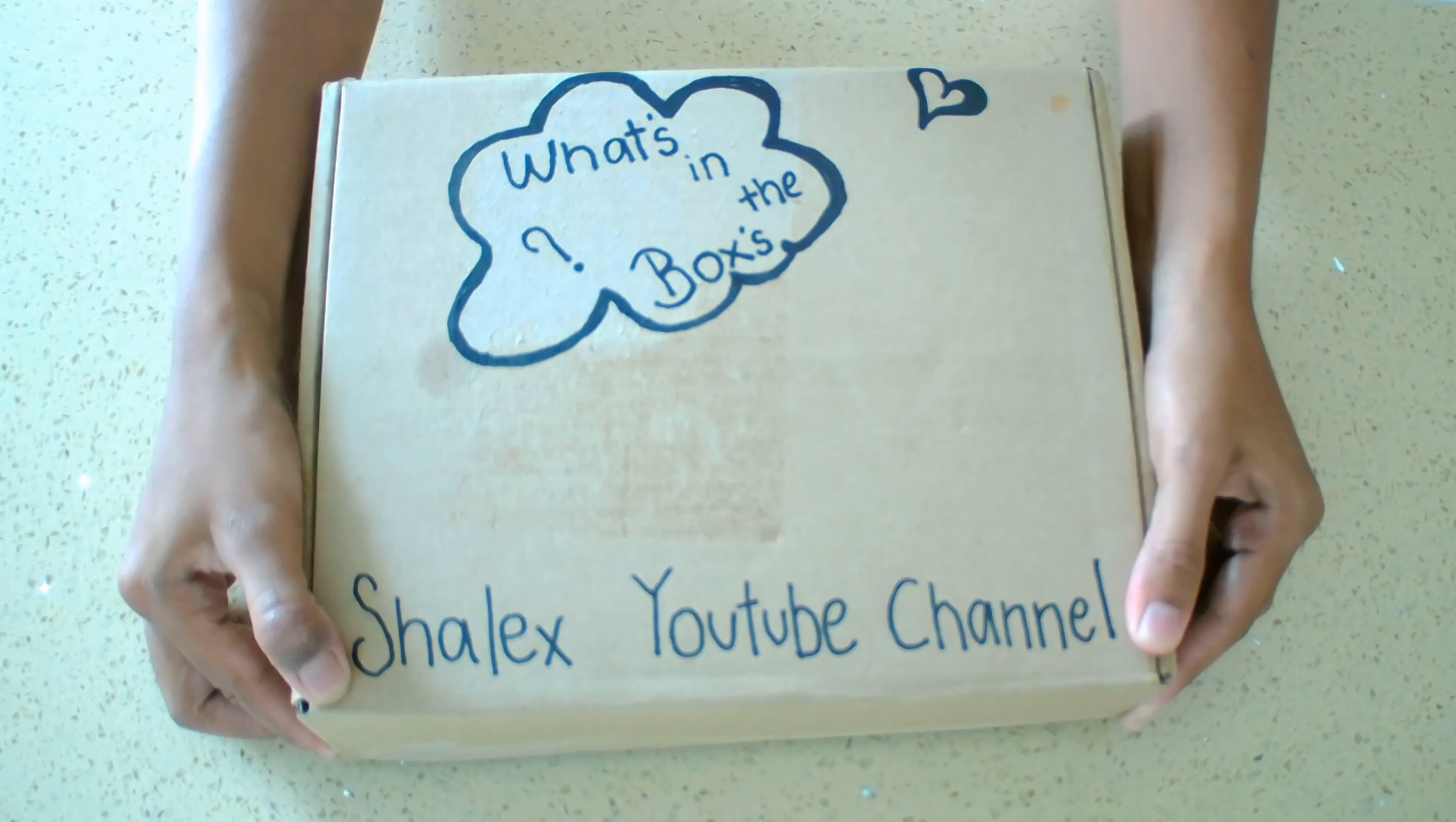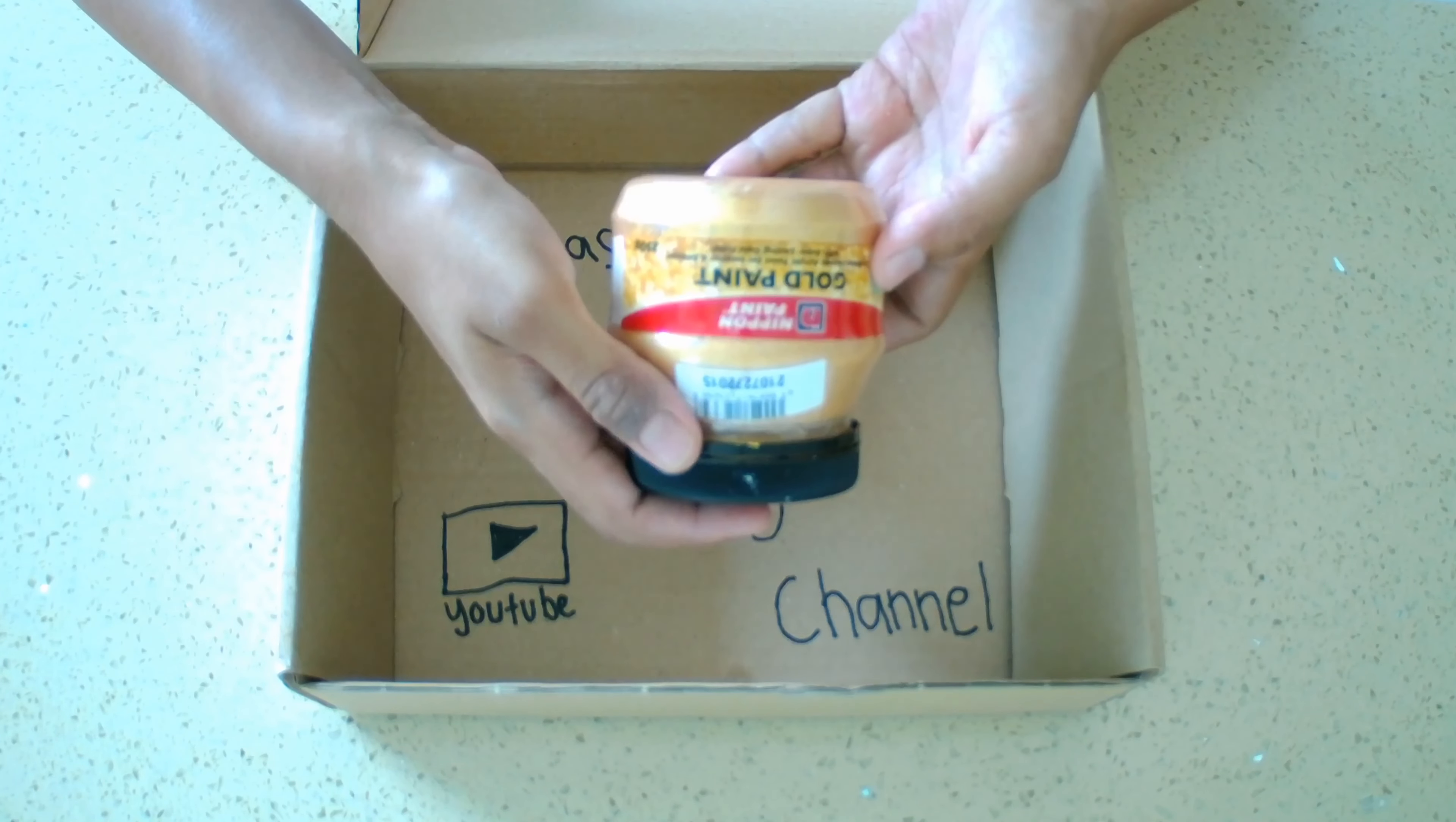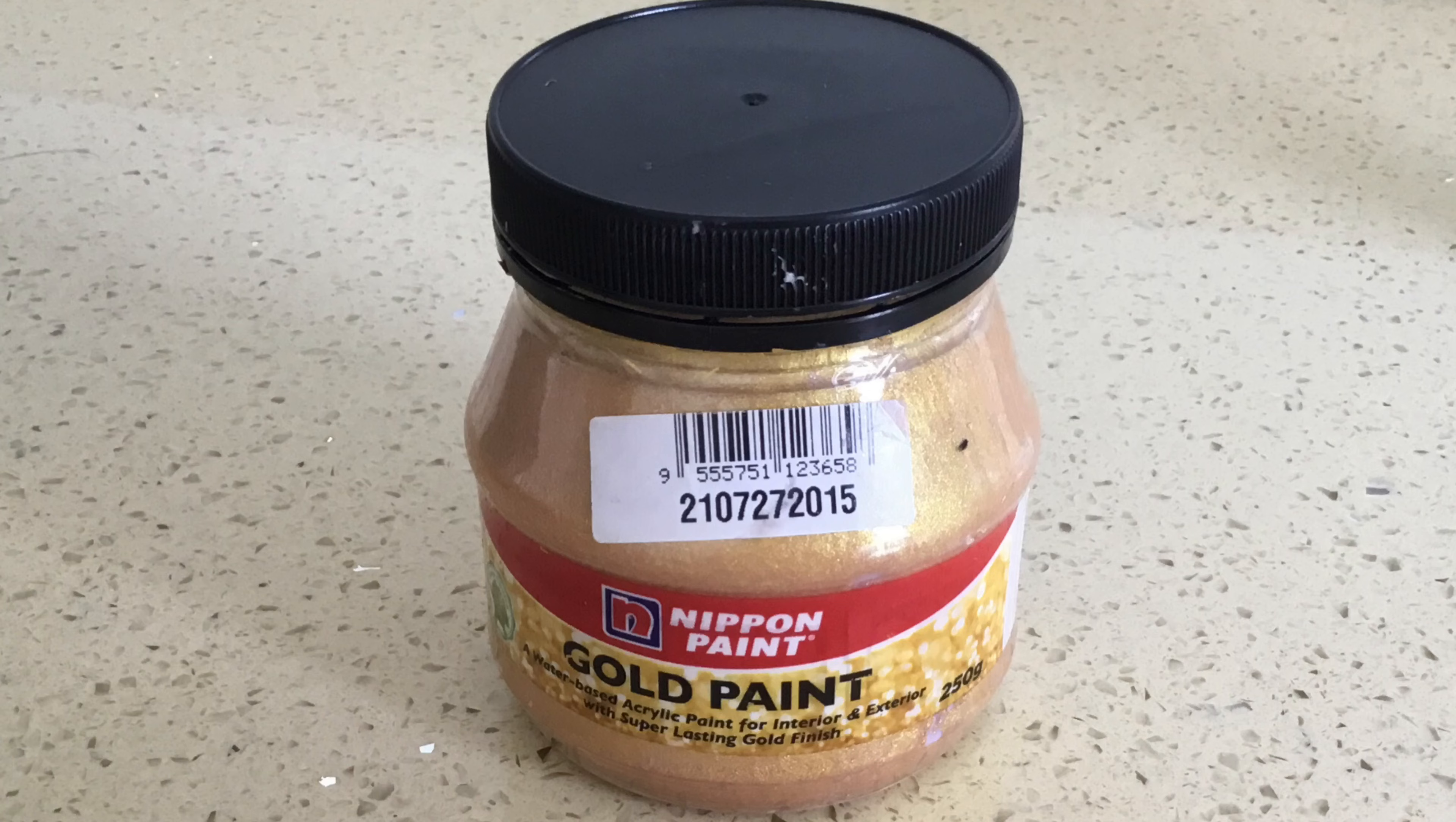Shellax YouTube channel. Today my review is on Nippon gold paint, 250 grams. You can use this gold paint on metal, wood, wall, and many other types of material.